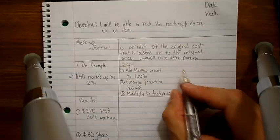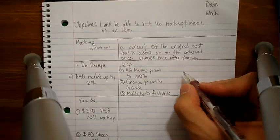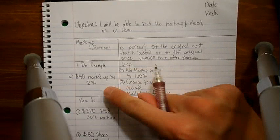by this markup percent to find the price after the markup. So, before I actually get going on the work, remember and make sure if you have to pause this video, please do, make sure that you have these steps written in your notebook. You're going to add the markup percent to 100. You're going to change the percent to decimal and then multiply them to find the price. And here you're going to see me do that for the I do example.